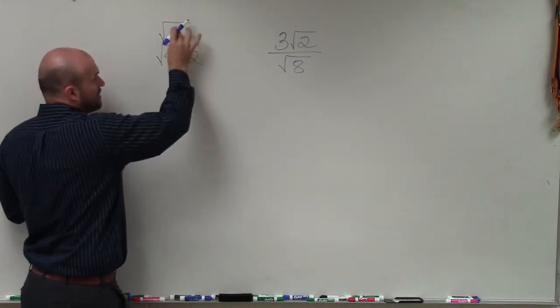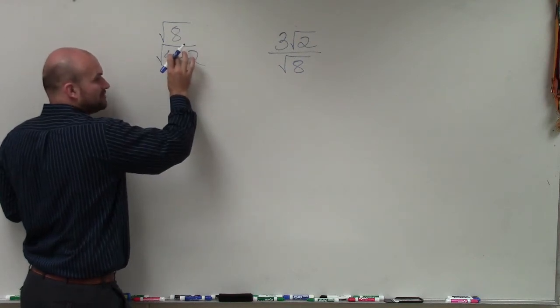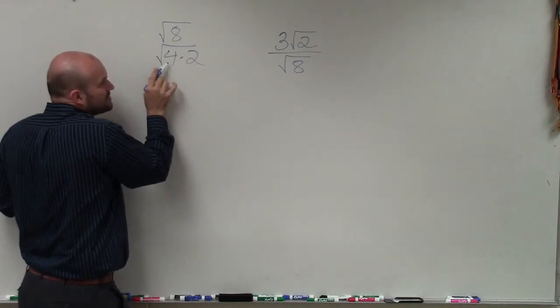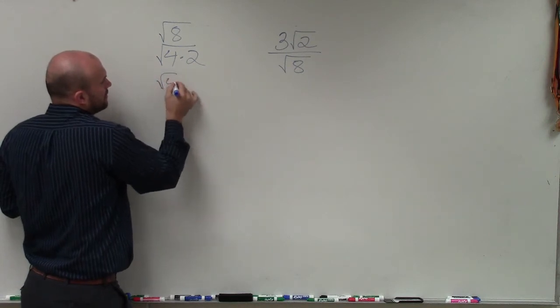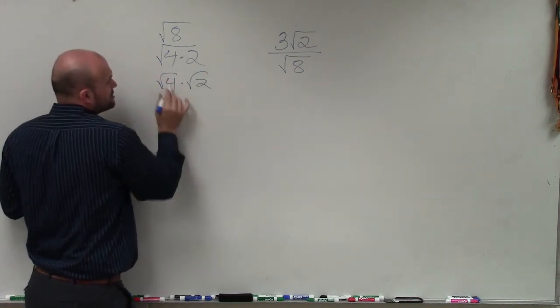What's helpful is when I break up 8 into the square factor of 4 times 2, I can now take the square root of 4, which is just going to be 2.